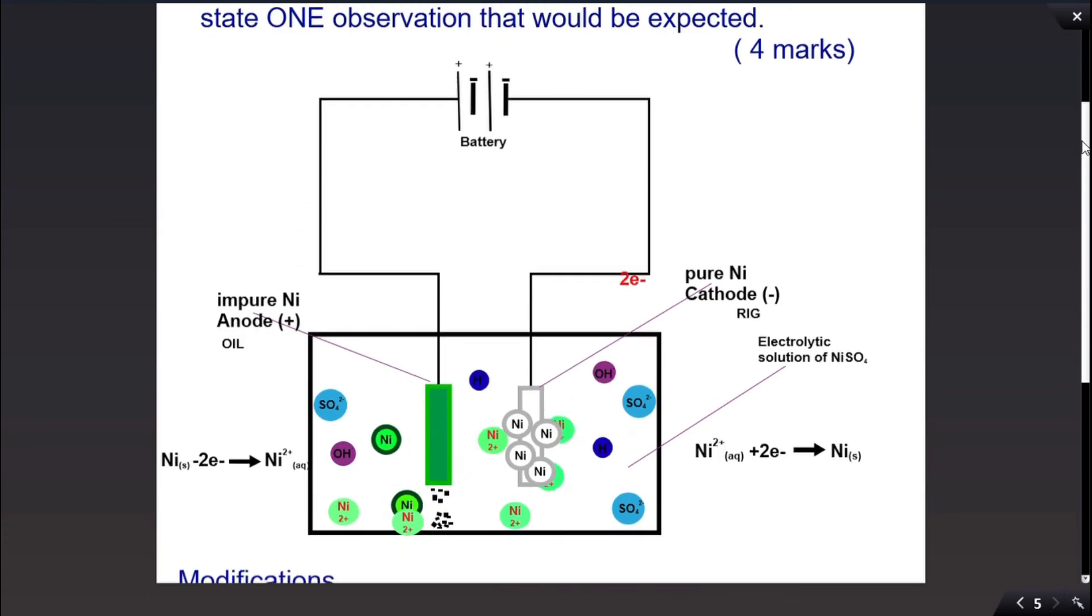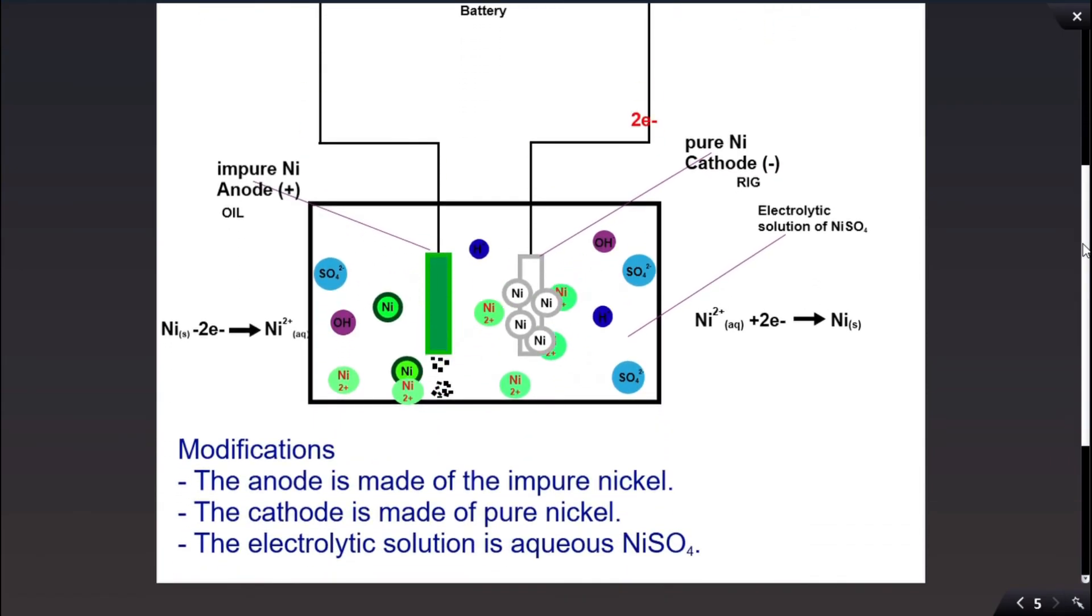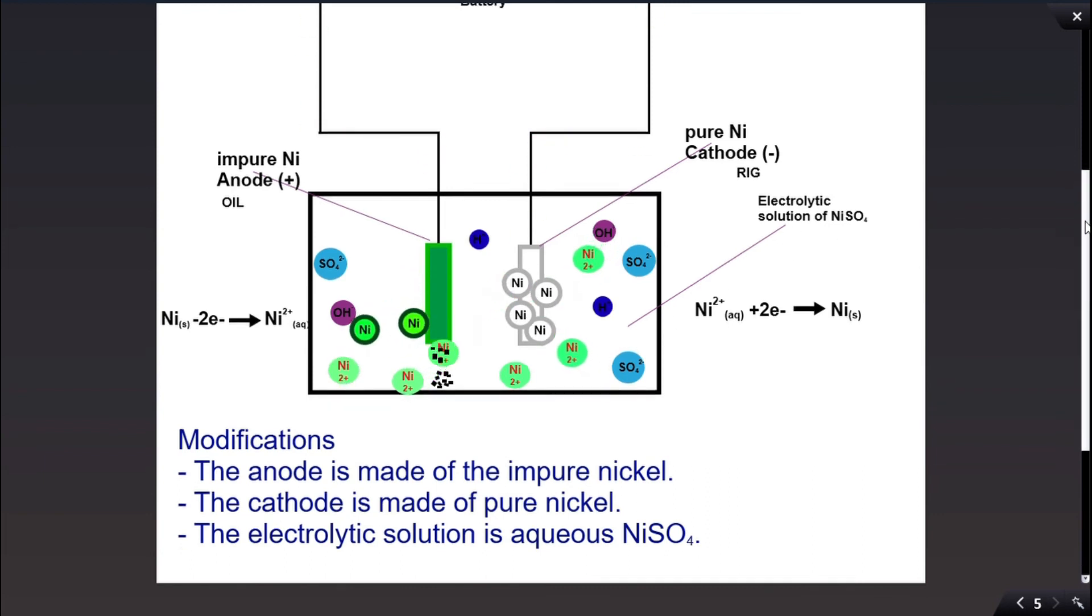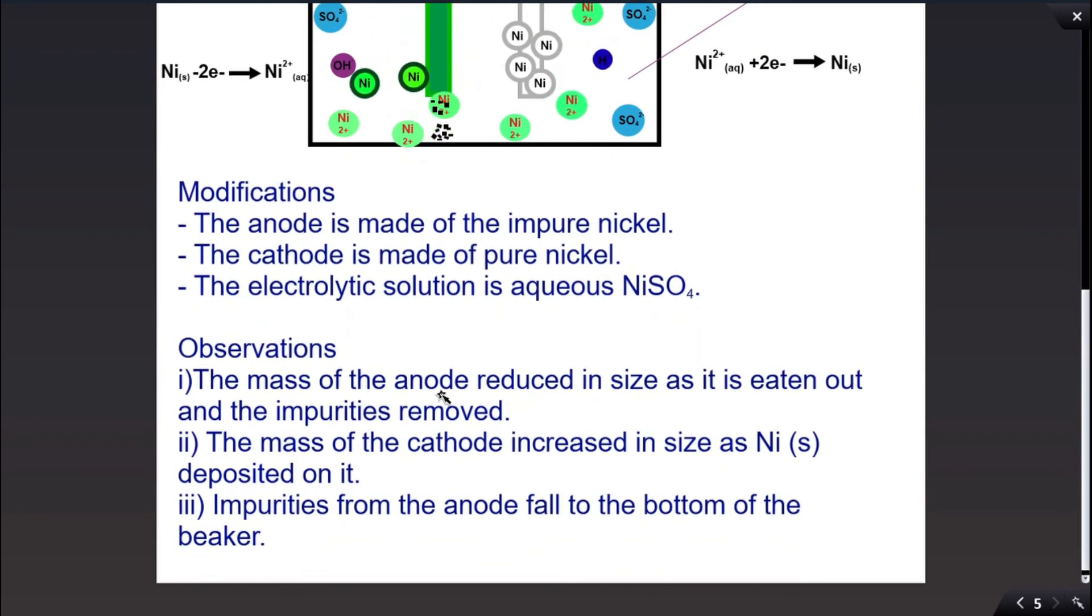So the line diagram is modified and animated as you can see here. Let us look at the modifications. The modifications are: the anode is made of the impure nickel, the cathode is made of pure nickel, the electrolytic solution is aqueous nickel sulfate.